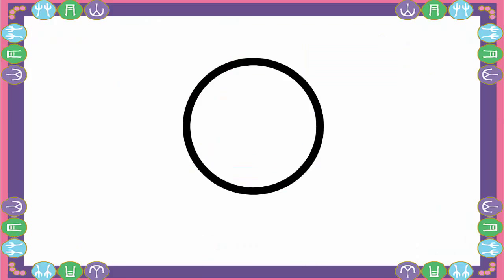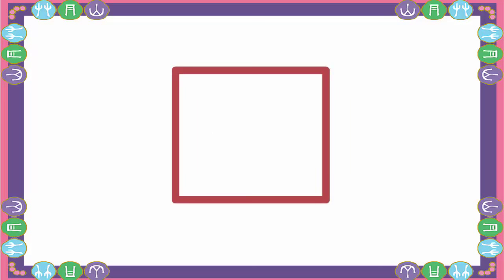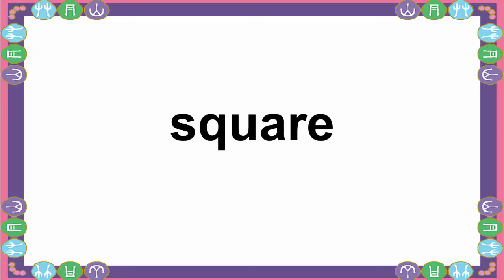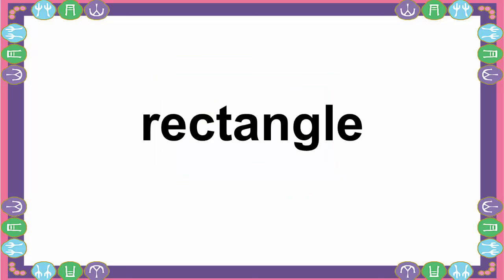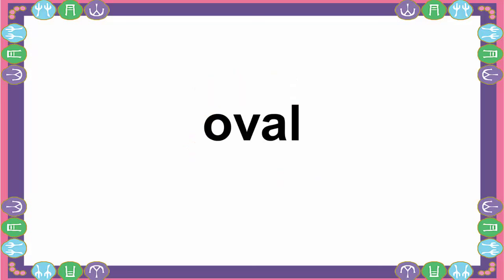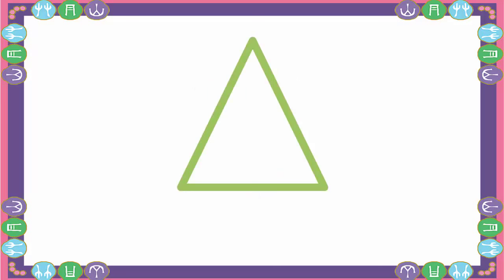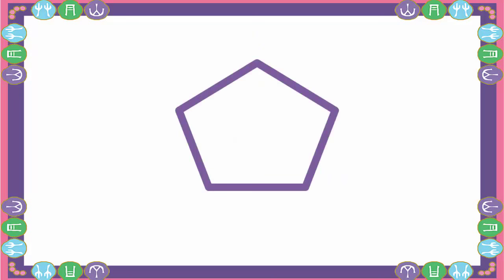What shape is this? Circle. What shape is this? Square. What shape is this? Rectangle. What shape is this? Oval. What shape is this? Triangle. What shape is this? Pentagon.